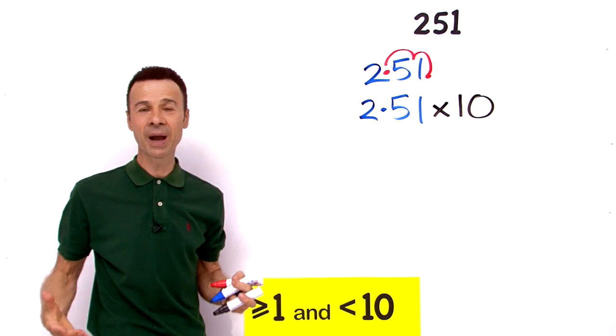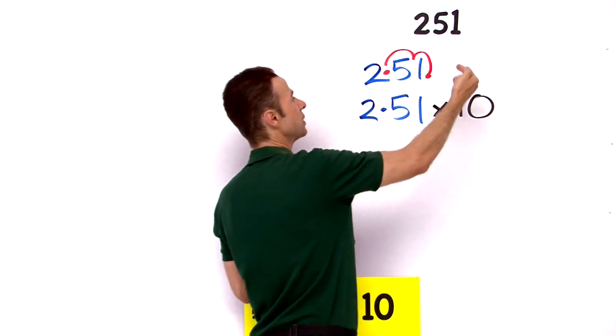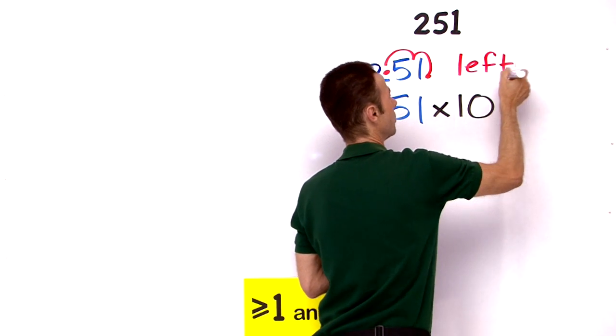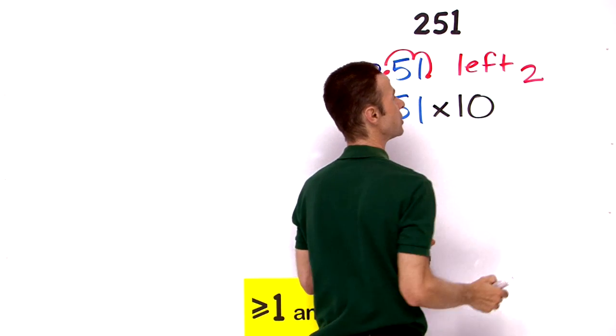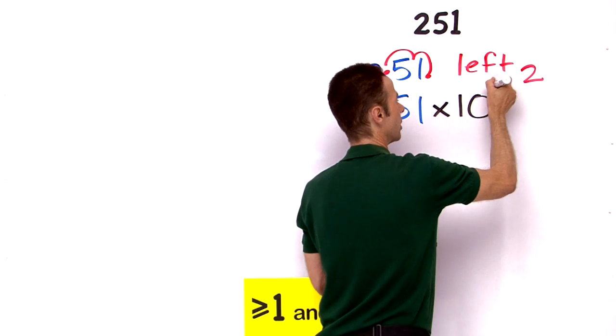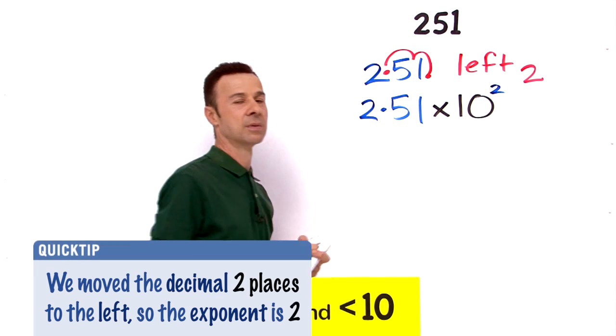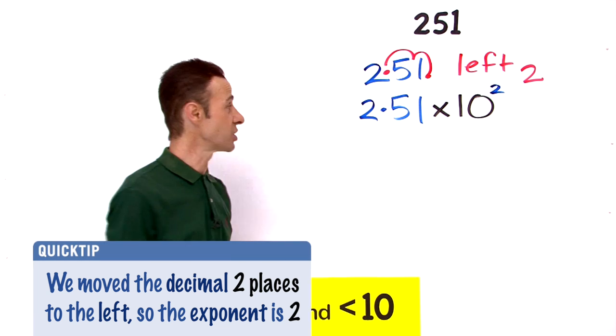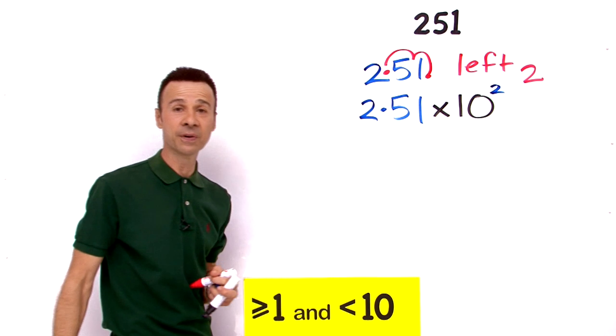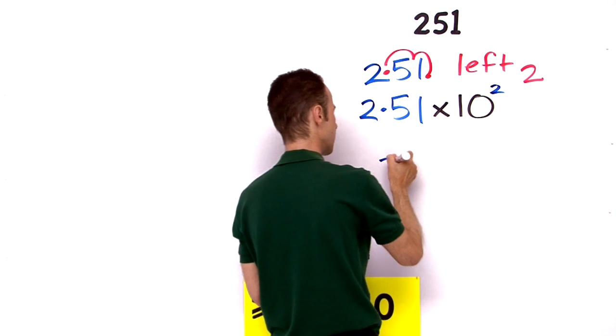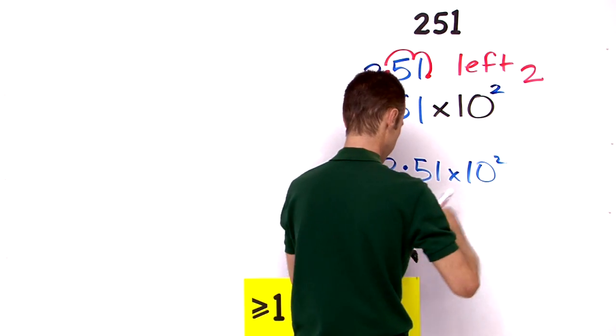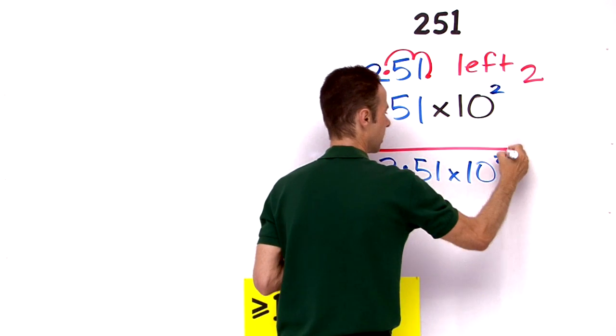Now what is the exponent power? Very easy. We moved to the left, did we not? How many places did we move to the left? We moved 2 places, did we not, that way. So that means up here we write to the power of 2. So that is scientific notation: 2.51 times 10 to the power of 2 is 251. So let me just write it again: 2.51 times 10 to the power of 2.